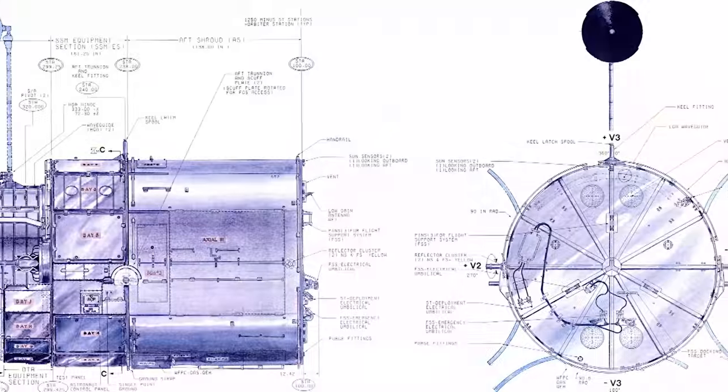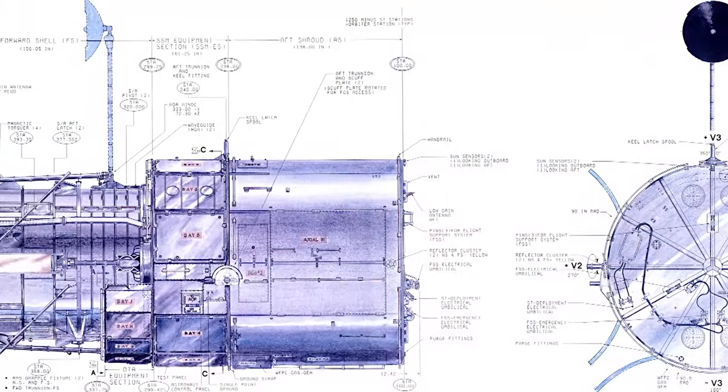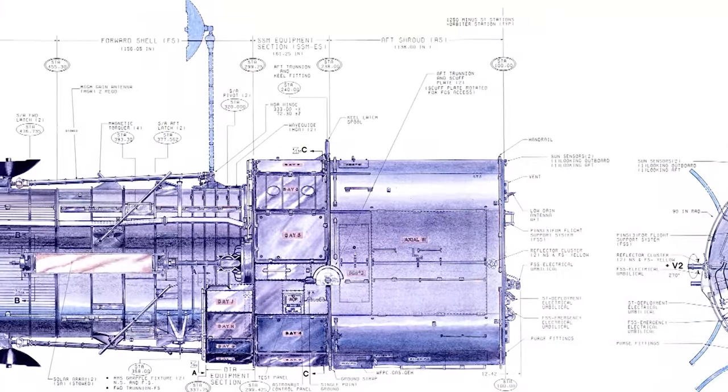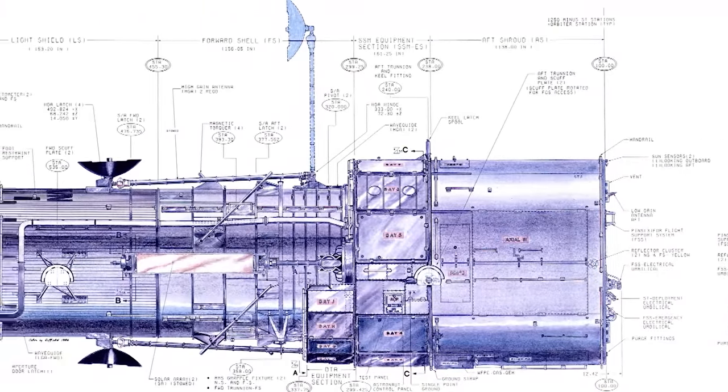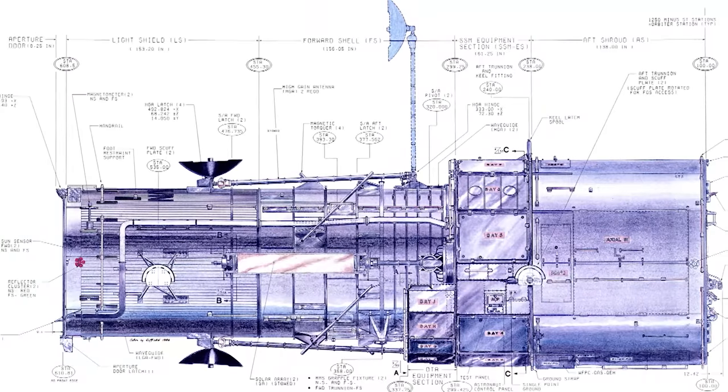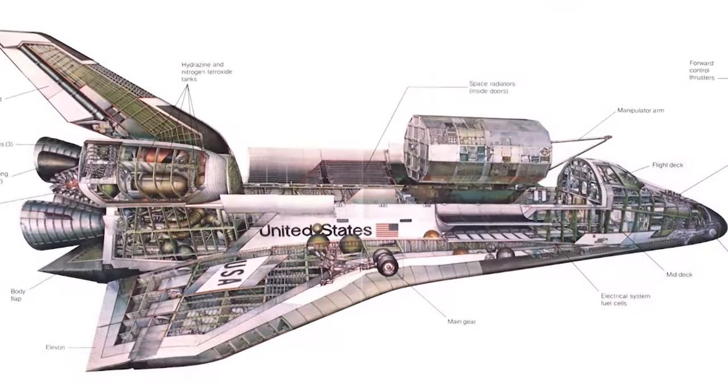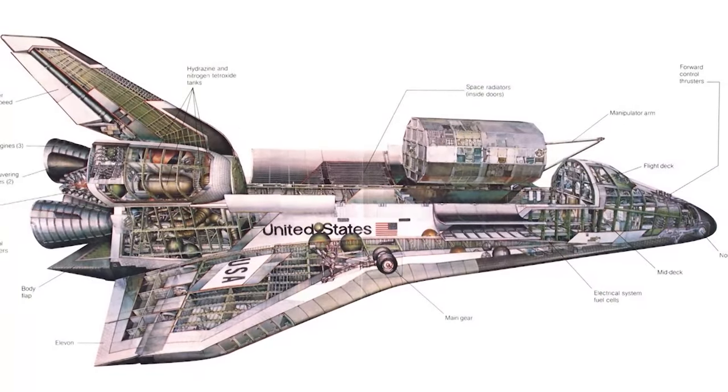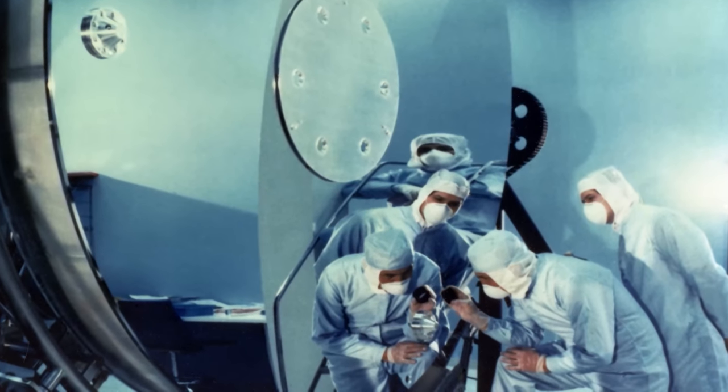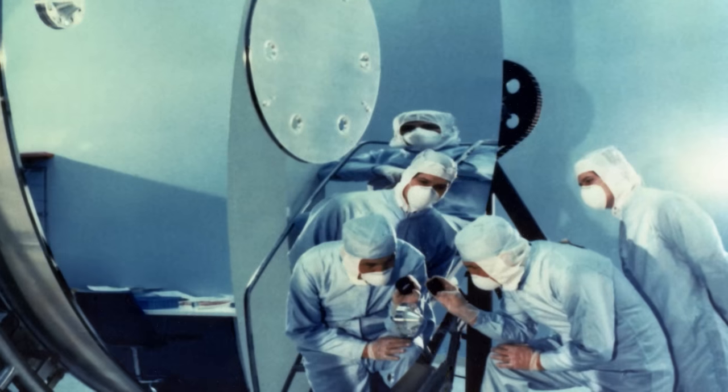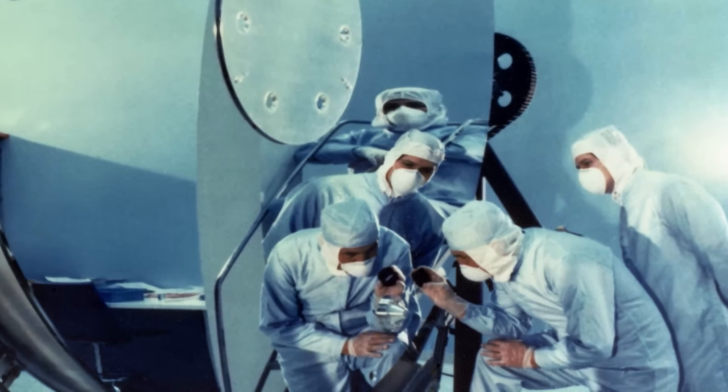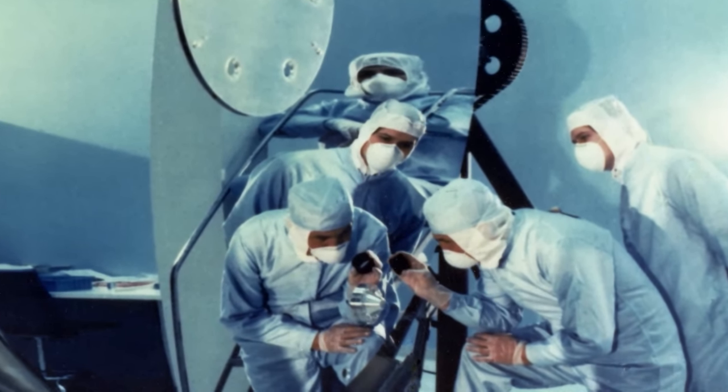In the 1970s plans were drawn up for a large orbiting telescope. Part of its brief was for it to be visited regularly by maintenance crews, something that would become possible when the space shuttle went into service. The design called for a 2.4 meter primary mirror ground within very fine tolerances, because it was required to function well into the ultraviolet spectrum.